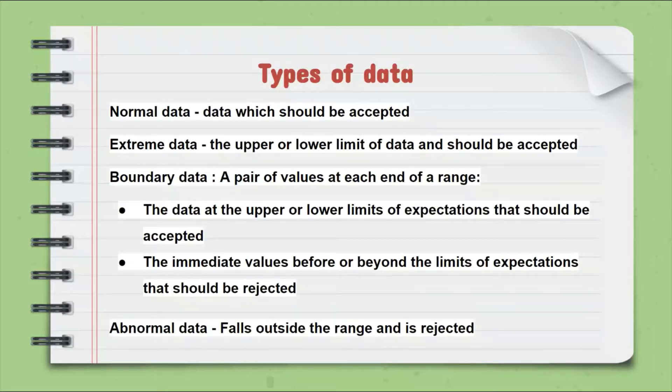Normal data are data which should be accepted. Extreme data are the upper or lower limit of the data and should also be accepted. Boundary data is a pair of values at each end of a range. The data at the upper limit or the lower limit of expectation should be accepted. The immediate values before or beyond the limit of expectations should be rejected.